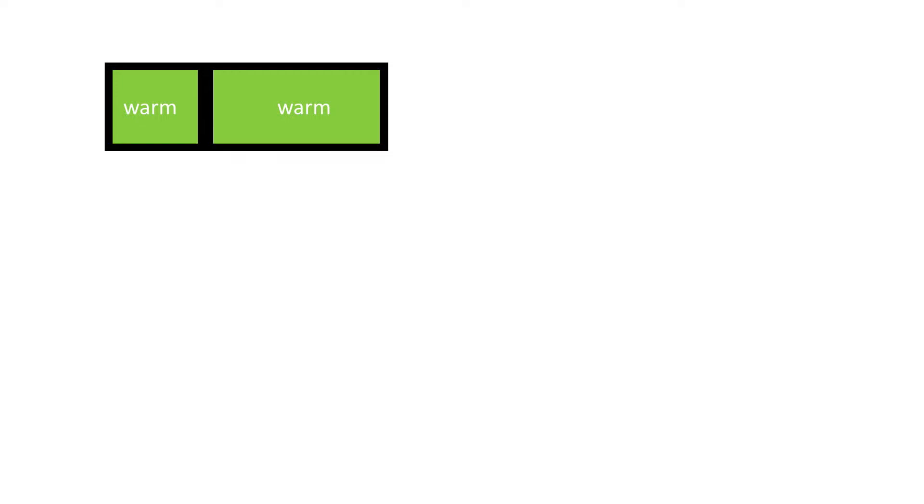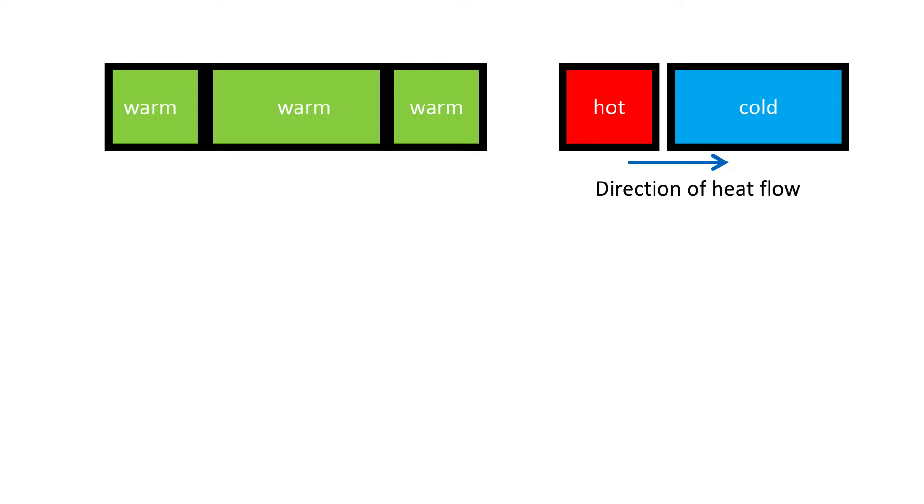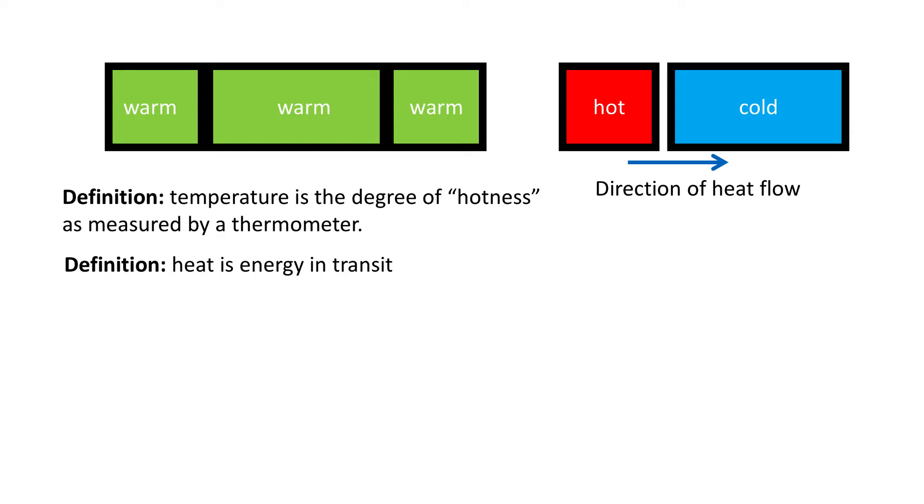Put another warm body into contact with them and nothing will happen. This tells us that heat flows from a hot body to a cold body—in fact, that is the definition of heat. Here's a definition: temperature is the degree of hotness as measured by a thermometer. This is just an intuitive definition; we haven't even said what a thermometer is. There are different kinds of thermometers, but if they're made correctly, they will all agree with each other.